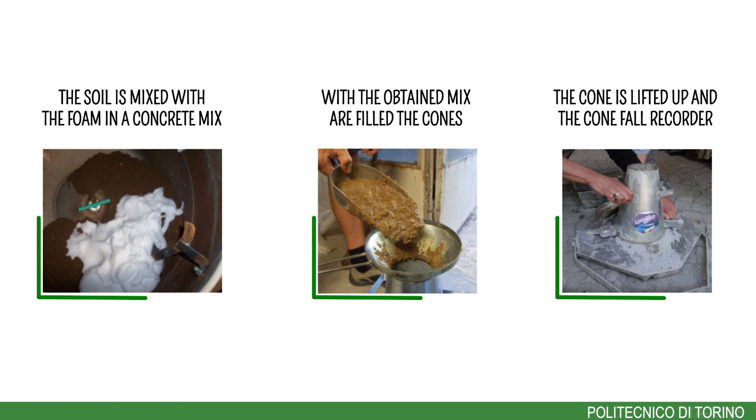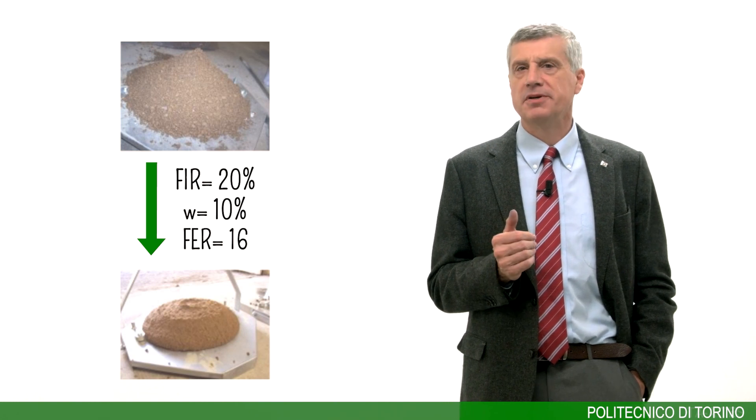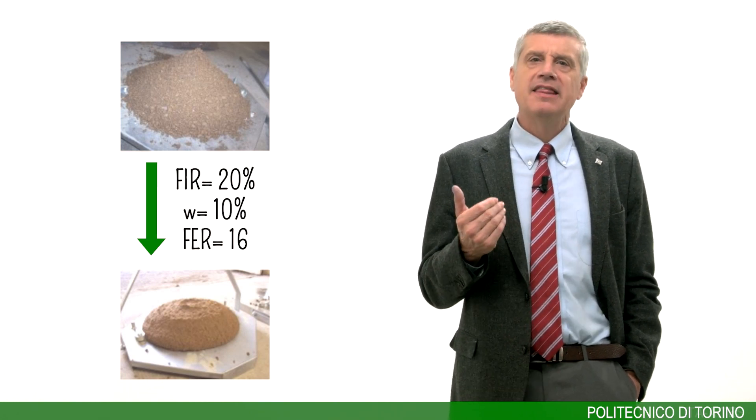The most frequently used laboratory test for conditioned soil assessment is the slump test. This test is popular thanks to its simplicity, which permits it to be used both in the laboratory and on the machine. A conventional slump cone standard as used for concrete is employed. Values of cone fall between 100 mm and 200 mm are considered optimal. The measures carried out when this procedure is used are: to measure the cone fall height and to observe the final consistency of the mix. This is an example of conditioning a granular soil by adding a foam volume of 20% and a water volume of 10%.